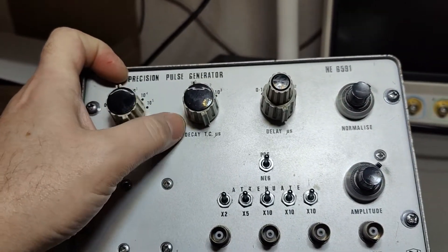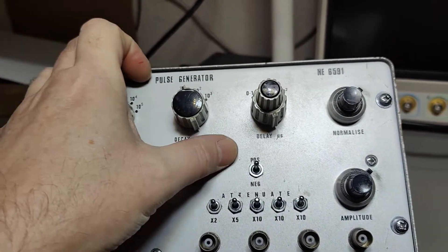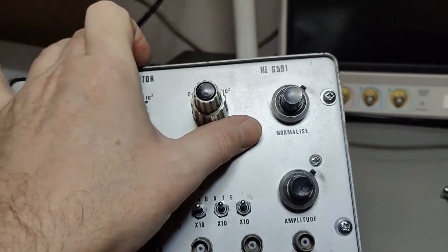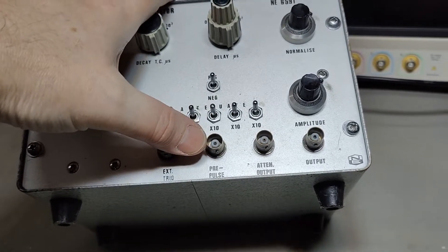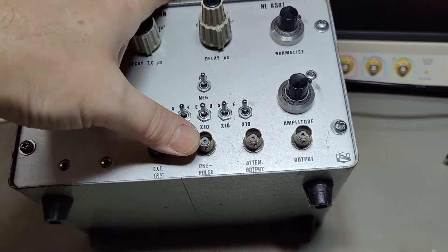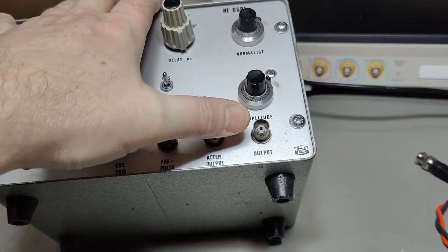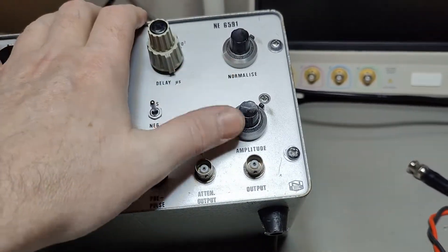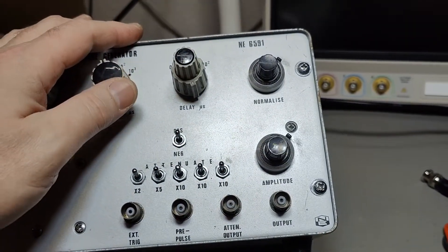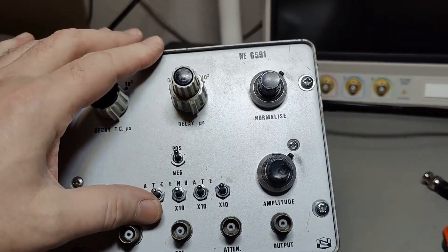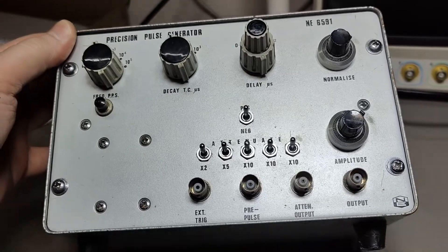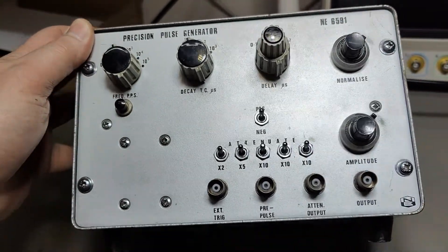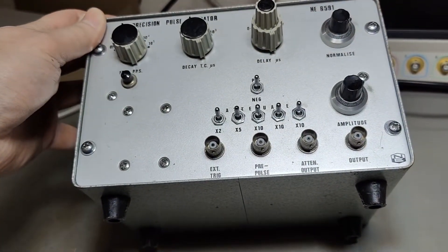We have normalize, an external trigger, a pre-pulse, an attenuator output, and the normal output. Amplitude I can understand, but there's definitely a lot of stuff I can't figure out exactly what is going on. I hope to figure that out during this video if this thing works.